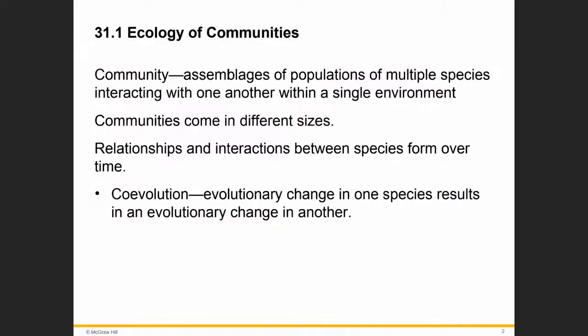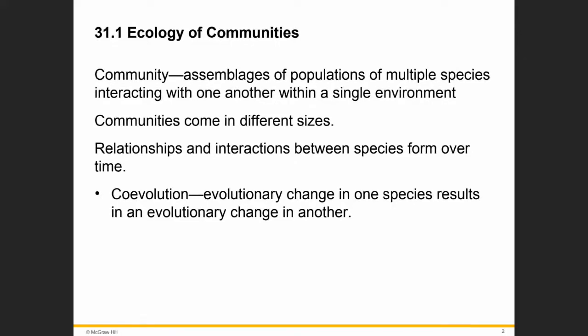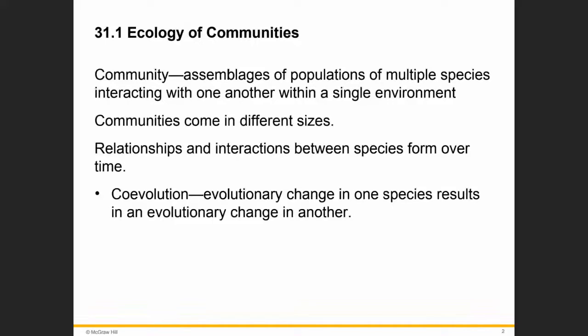A community is an assemblage of populations of multiple species interacting with one another within a single environment, such as our community college. We are all together — multiple species. We can have a dog, some prokaryotic bacteria, some trees. Communities come in different sizes.